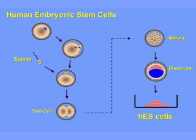It goes to a morula stage, which has approximately 16 cells, and then on to a blastocyst stage, which has approximately 100 cells.